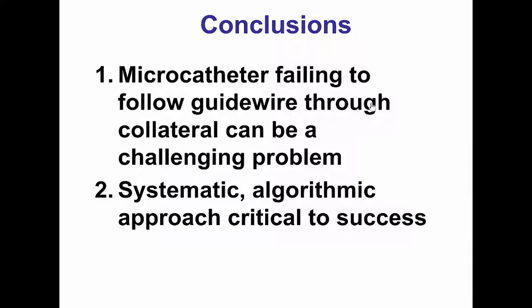In summary, this scenario of the microcatheter failing to follow the guide wire through a collateral is fairly common and can be challenging to treat. However, having a systematic approach — including ways to deliver the microcatheter, attempting retrograde crossing with the initial wire, using it as a marker for antegrade crossing, or trying a different collateral — can help achieve success in this situation. Thank you.